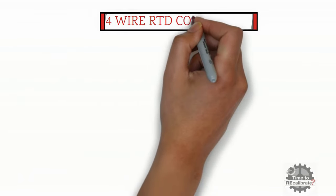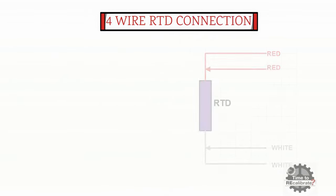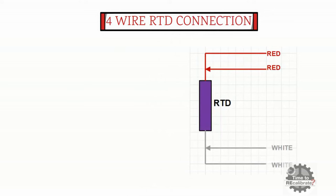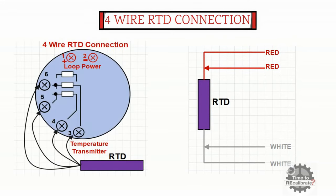In this section, I am going to show the 4-wire RTD connection with a temperature transmitter. As the name suggests, 4-wire RTD has 4 cables: 2 red cables and 2 white cables. To connect 4-wire RTD to the temperature transmitter, connect one red cable to terminal number 5 and another red cable to terminal number 6. After this, connect one white cable to terminal number 3 and another white cable to terminal number 4 of the temperature transmitter. Once done, turn on the loop power supply and check the reading on the display.